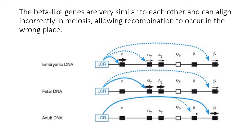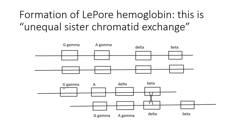Here's the globin locus again. The point is that these are all very closely related protein-coding genes — they're all beta globins — and even though they're slightly different in amino acid sequence, they're similar enough that they can align with each other and undergo recombination when not aligned with their actual homolog. This is represented here with the formation of the famous Lepore hemoglobin, a result of unequal sister chromatid exchange.